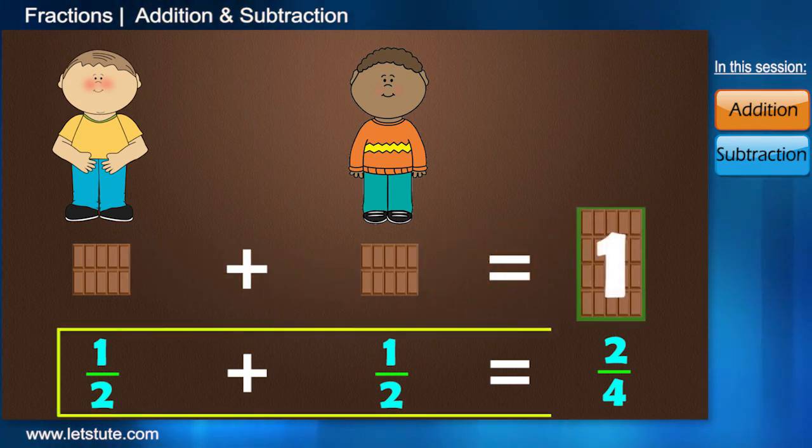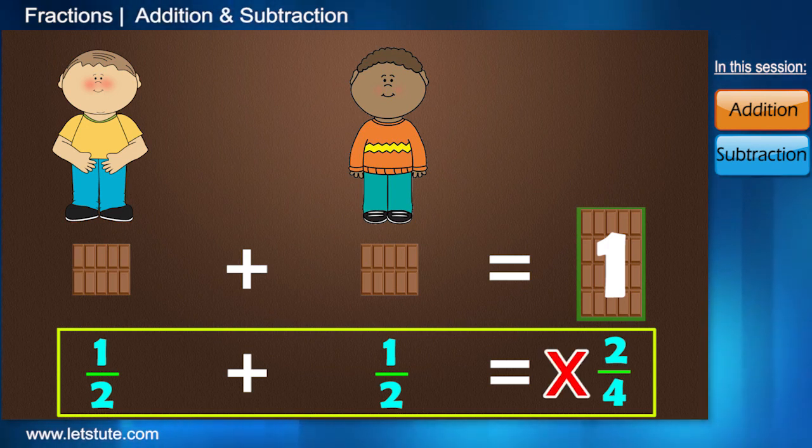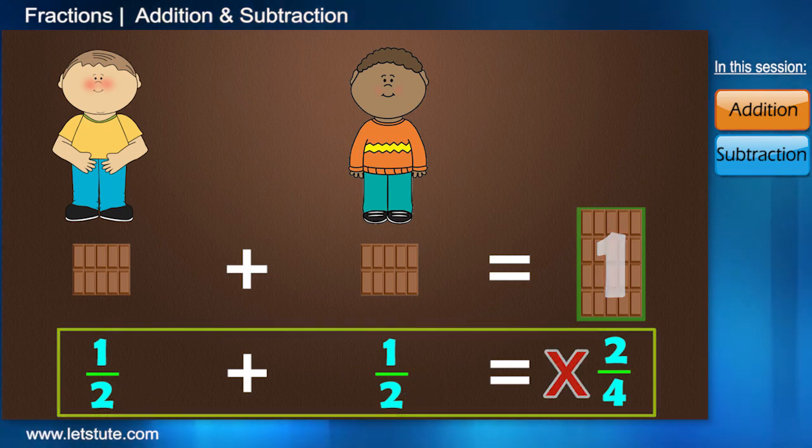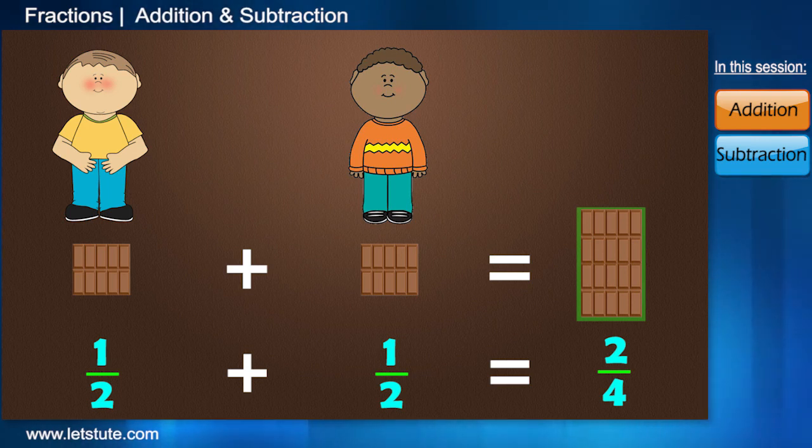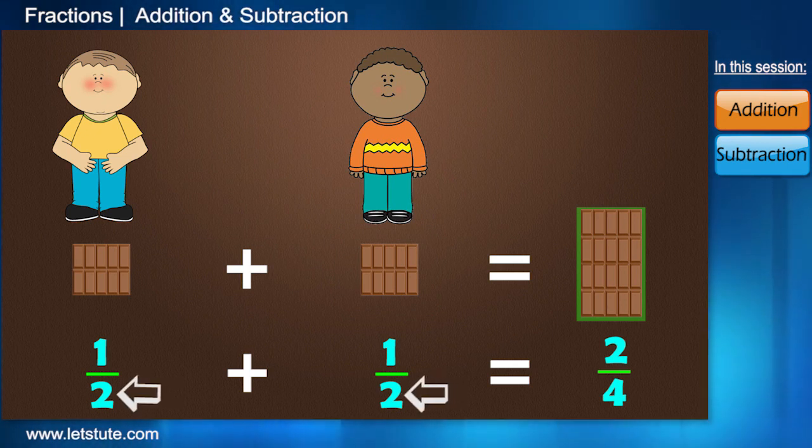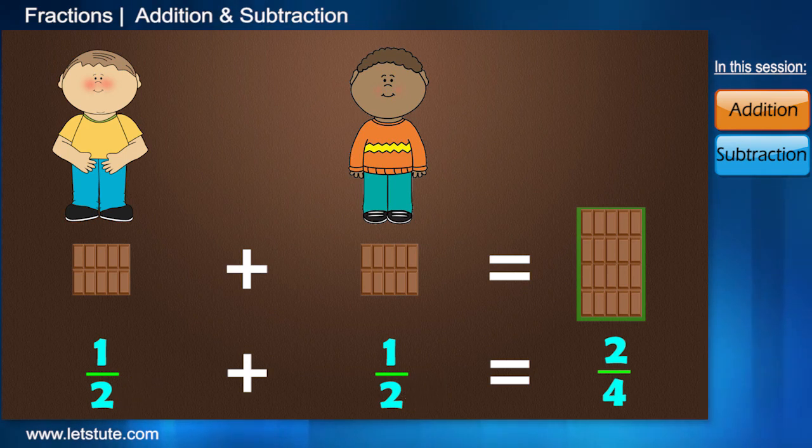What we have done is we are actually wrong. We can never add the denominators of fractions. Now, you may ask why? Let's have a practical look at this thing. You had half part of the chocolate and your friend had the other half. Now, here, when we add the denominators, we can see that in total, we have 4 parts.